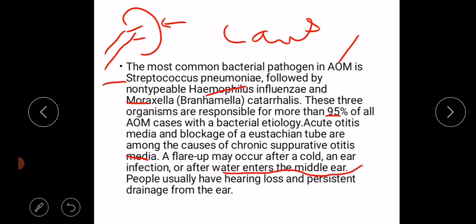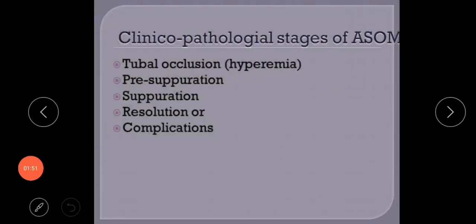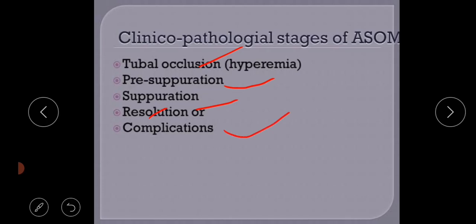People usually have hearing loss and persistent drainage from the ear. The clinical pathological stages of ASOM are: first, tubal occlusion; second, pre-suppuration; third, suppuration; and fourth, resolution or stage of complications. We will discuss all of these stages separately.